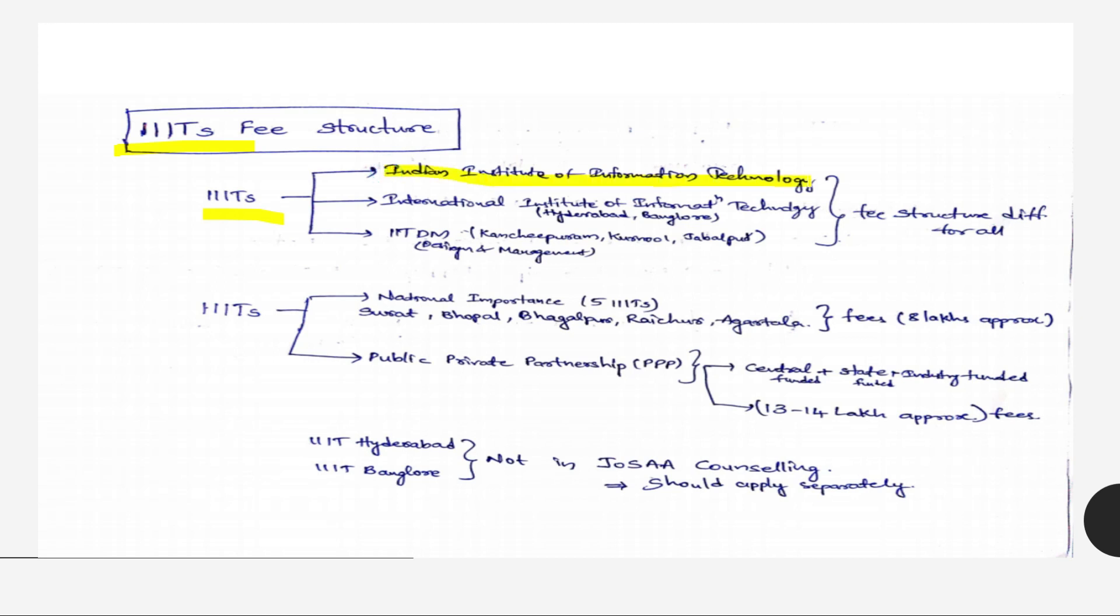Indian Institute of Information Technology, International Institute of Information Technology which are Hyderabad and Bangalore - these are only two which are called International Institute of Information Technology. And IIIT-DM which is Indian Institute of Information Technology Design and Management - Kancheepuram, Kurnool, and Jabalpur.